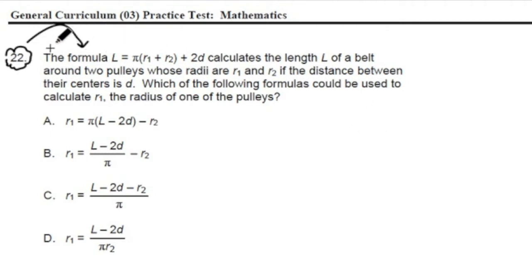Number 22 says: The formula L equals pi times the quantity of r1 plus r2 plus 2d calculates the length of a belt around two pulleys whose radii are r1 and r2, if the distance between their centers is d. Which of the following formulas could be used to calculate r1, the radius of one of the pulleys?